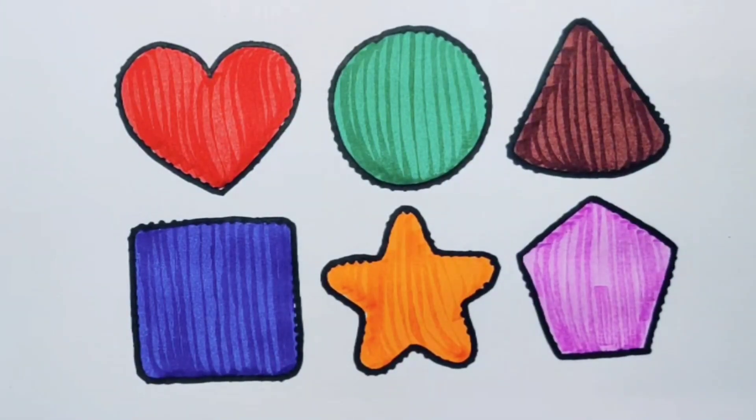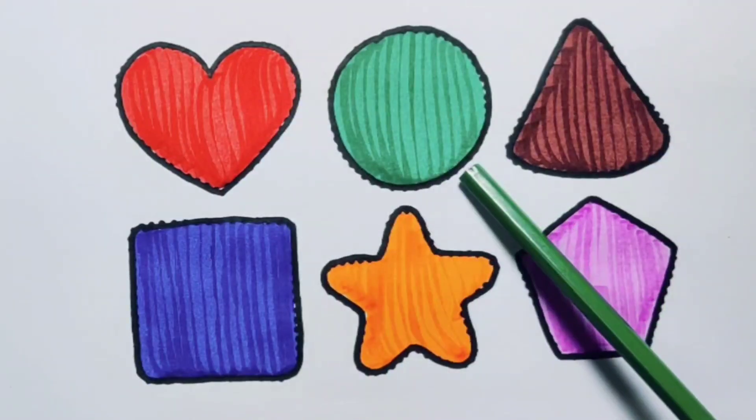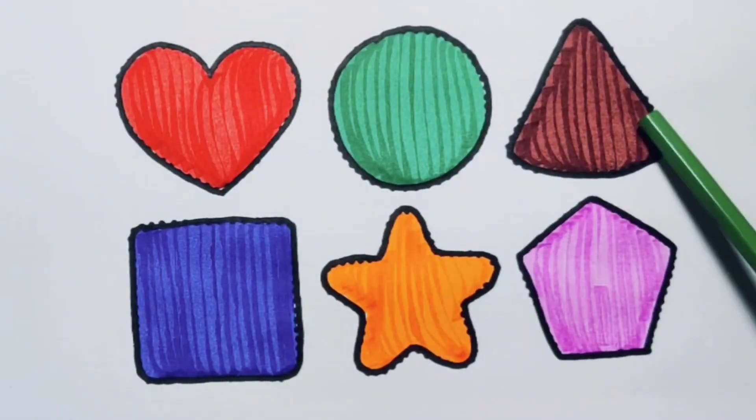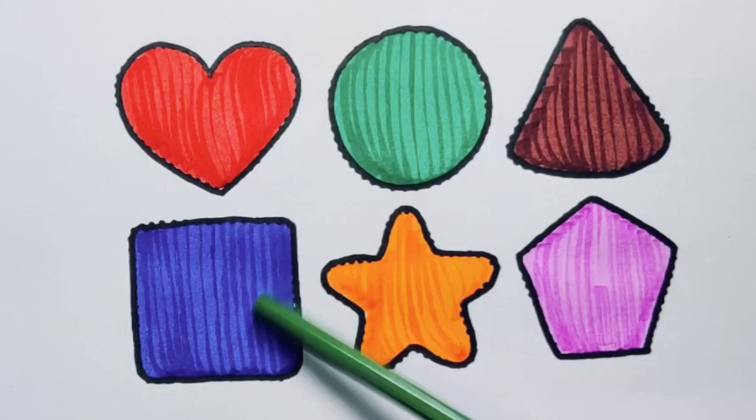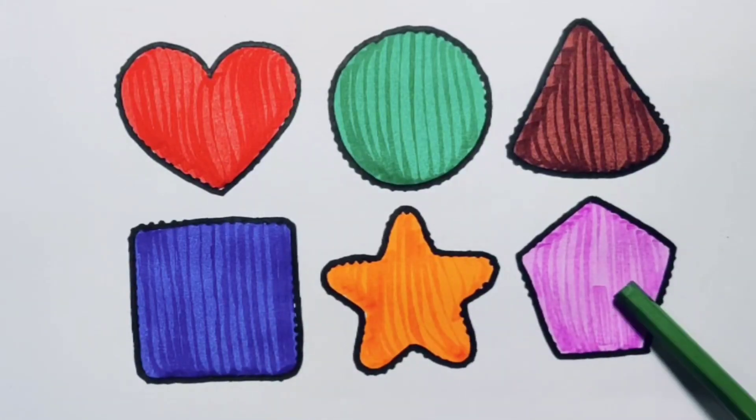What we learned: we learned red color heart, green color circle, chocolate color triangle, blue color square, orange color star, pink color pentagon.